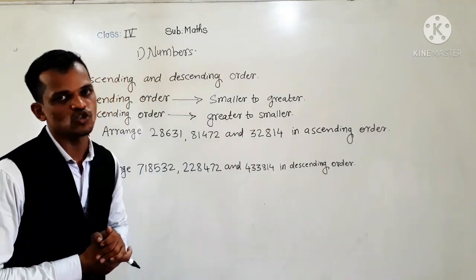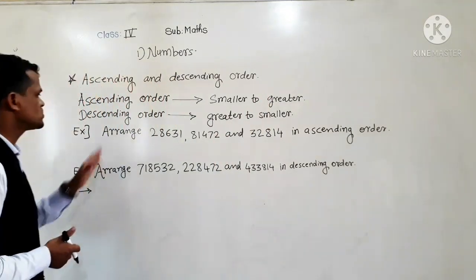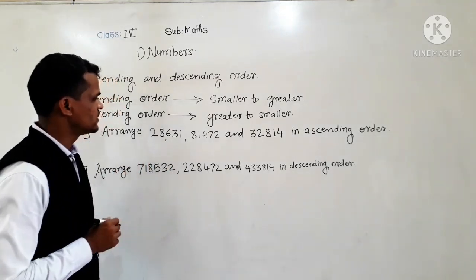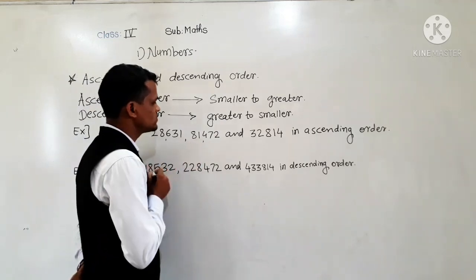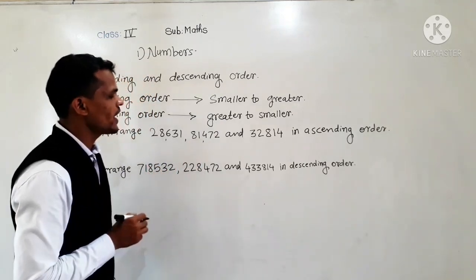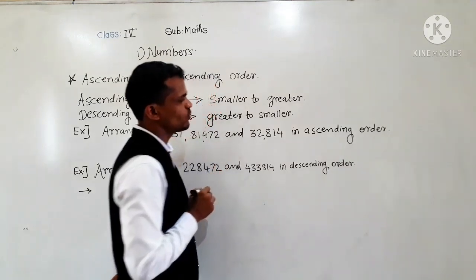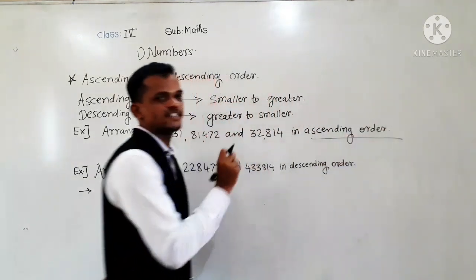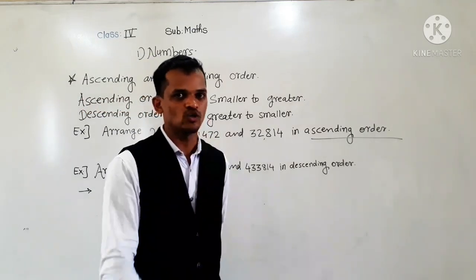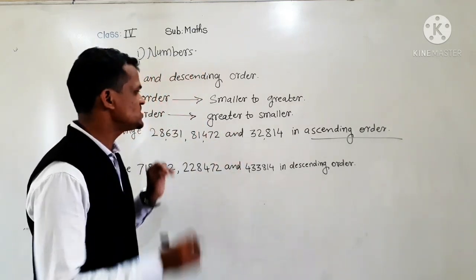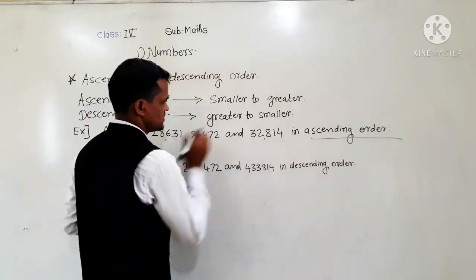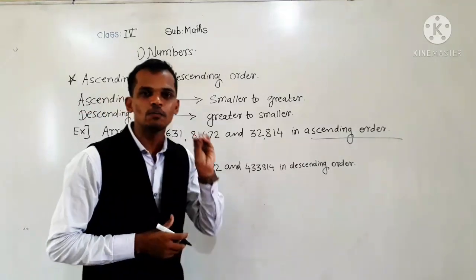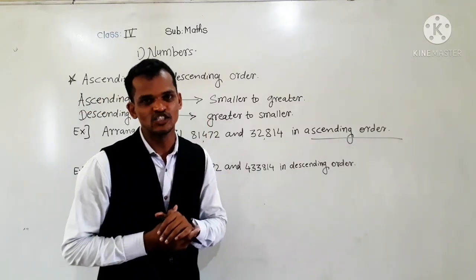Now we will see some examples to understand. Arrange 28,631, 81,472 and 42,814 in ascending order. Ascending order means smallest to greatest. So now find which is the smallest number. These are 5-digit numbers, so we will compare the 10,000 place digit.